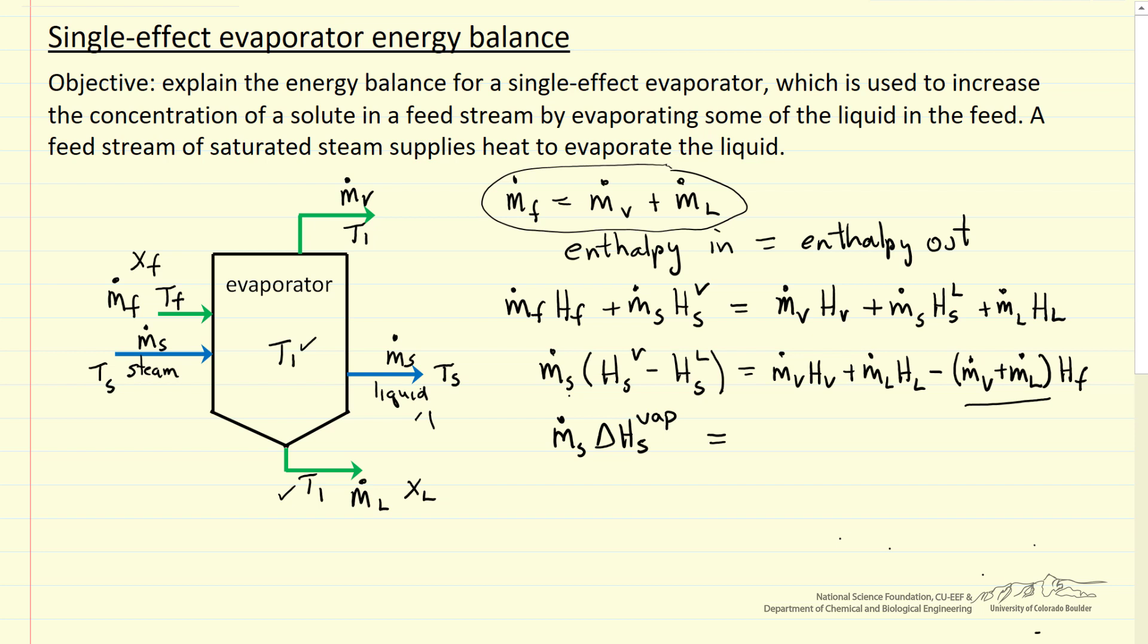I can group the terms together now. Because I'm considering this aqueous solution, we can look up these values in the steam tables: heat of vaporization at temperature T_S. These values for the vapor and the feed are at different temperatures, and likewise the liquid and the feed are at different temperatures, but again we can look them up in the steam tables.